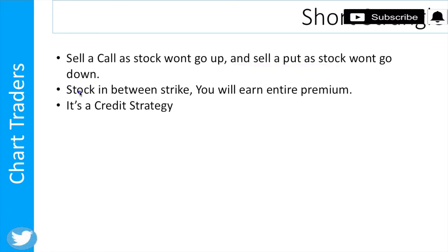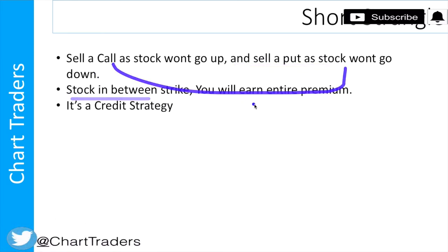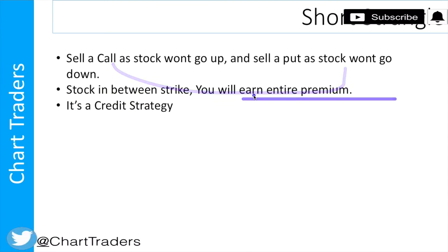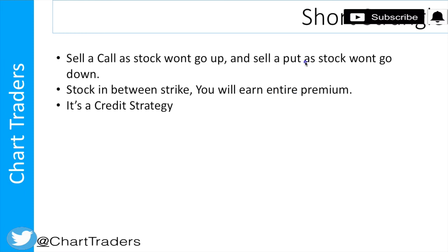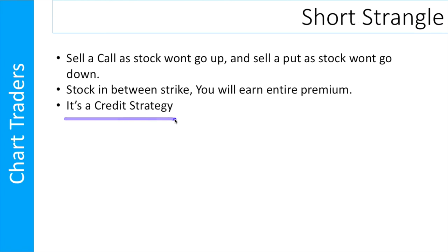If the stock expires within that range, then you can earn the entire premium. It is a credit strategy — meaning you receive premium. You don't pay premium; you receive it.